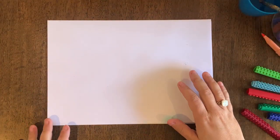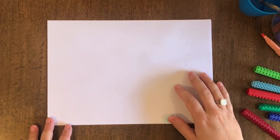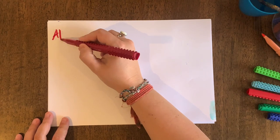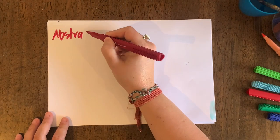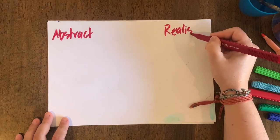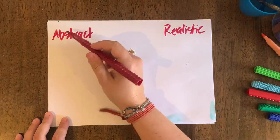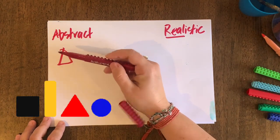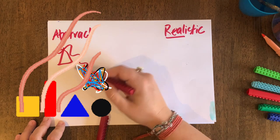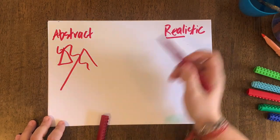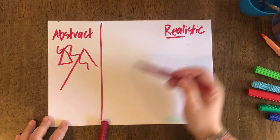Before we get into any art today, it's important to understand the different types of art that can be created. Generally, an artwork is either abstract or realistic. Abstract meaning it doesn't look real — it might be made of shapes and lines and things like that. Today we're focusing on realistic types of artwork.